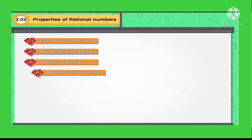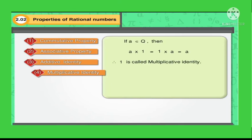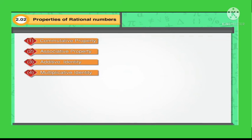The fourth property is multiplicative identity. If A is any rational number, then A into 1 is equal to 1 into A is equal to A. Here, 1 is called the multiplicative identity. For example, 7 into 1 is equal to 1 into 7 is equal to 7.